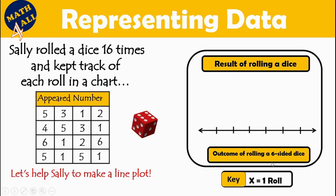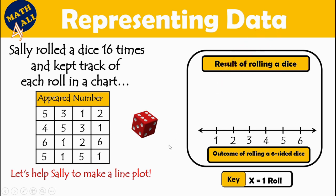We have the title: the result of rolling the dice. We have the unit of measurement: the outcome of rolling a six-sided dice, so the outcome will be from 1 to 6. Now we have to represent data on the line plot using X's. Here is the key: X means 1 roll.